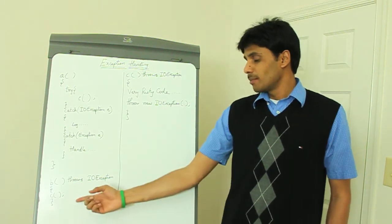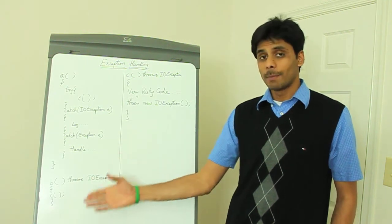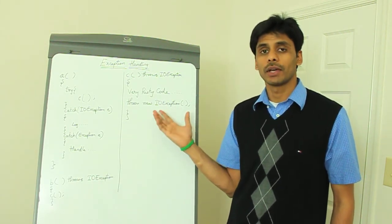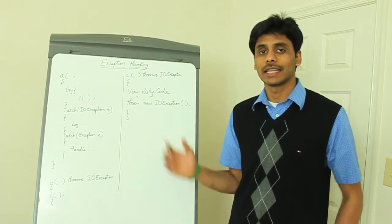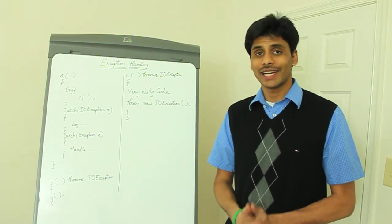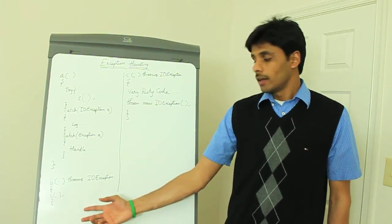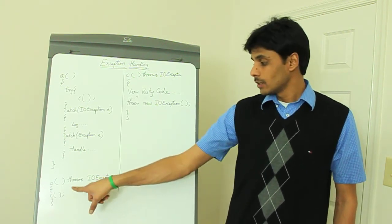But as you can see, method B, which calls method C, should handle the IO exception because IO exception extends the exception class and it's a checked exception. But you see that method B doesn't do it. The reason being, it uses the throws declaration.